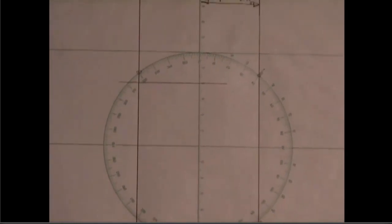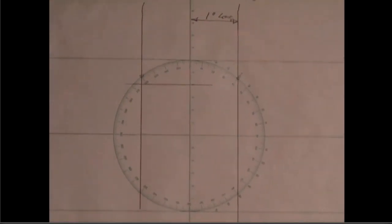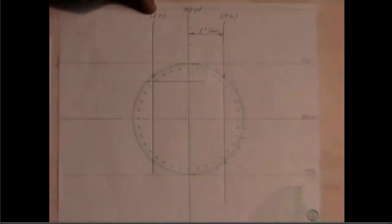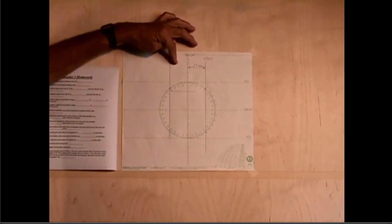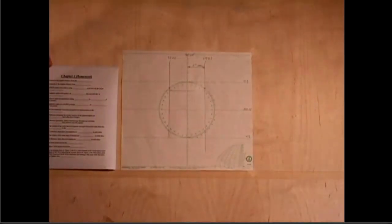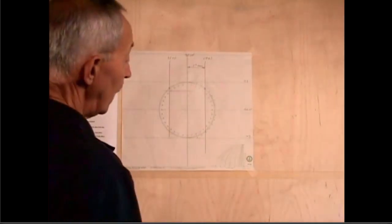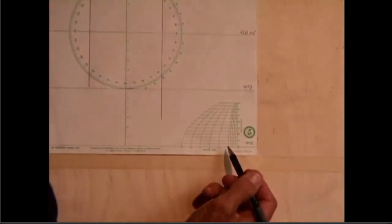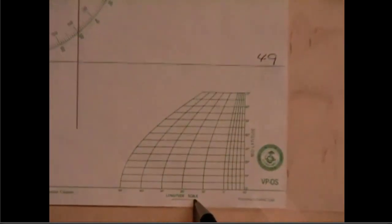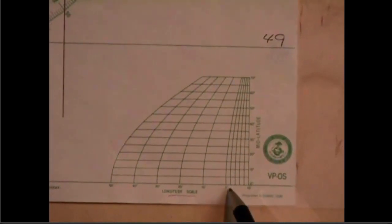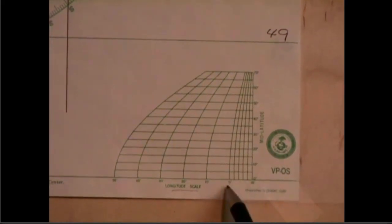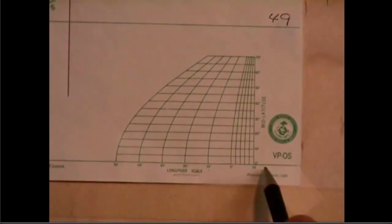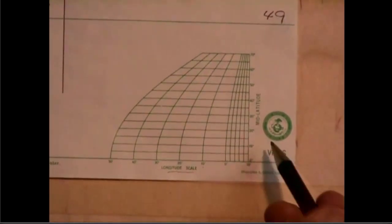Then it asks for 30 degrees 45 minutes west. Well, here's 30 and here's 31, but I don't have a scale of minutes in here. And that's what this little configuration here is used for. If you look closely at this, you'll see at the bottom it says longitude scale, and notice that these are marked with minutes: 10 minutes, 0 minutes, 10 minutes, 20 minutes, 30 minutes, 40 minutes, 50 minutes.